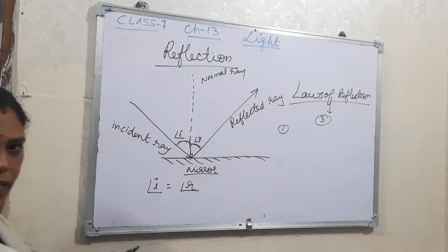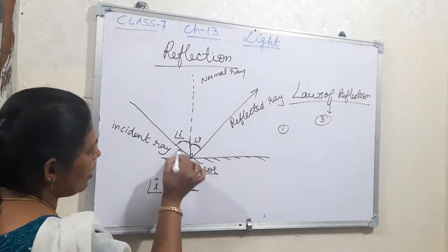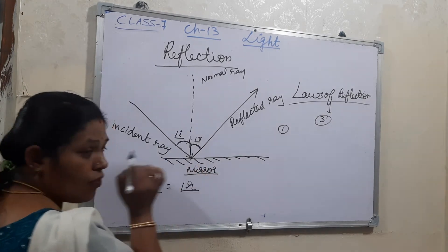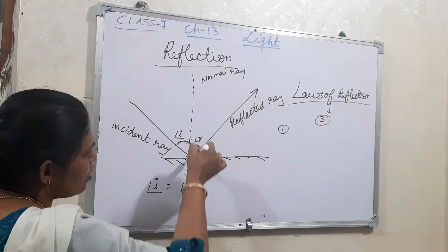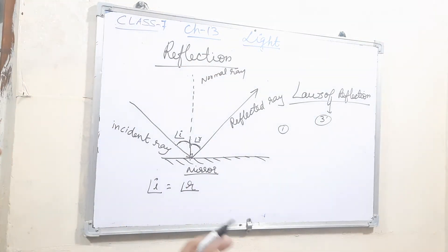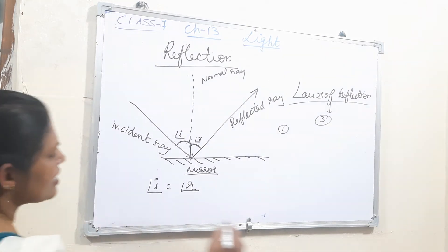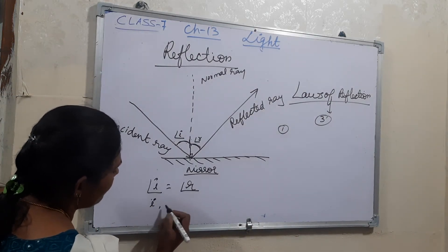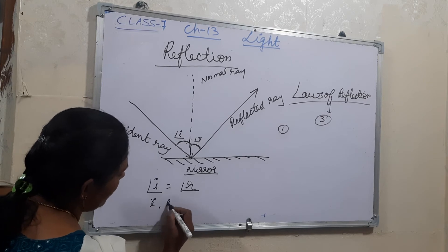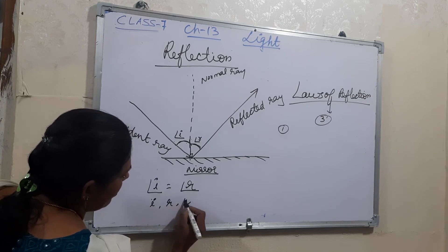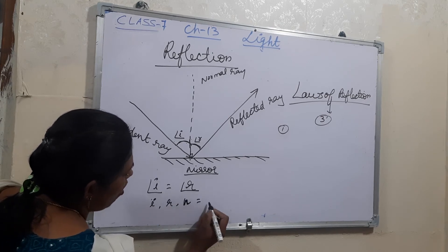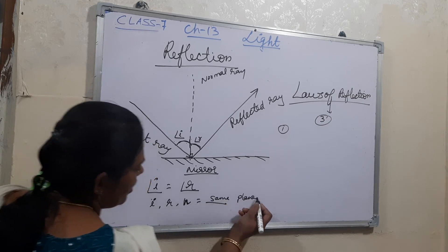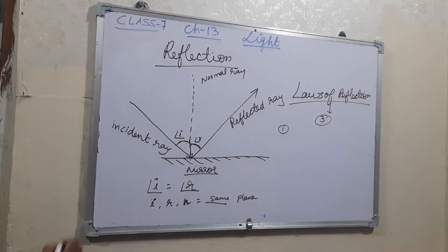The second law of reflection says that the incident ray, the reflected ray, and the normal — all three lie in the same plane.